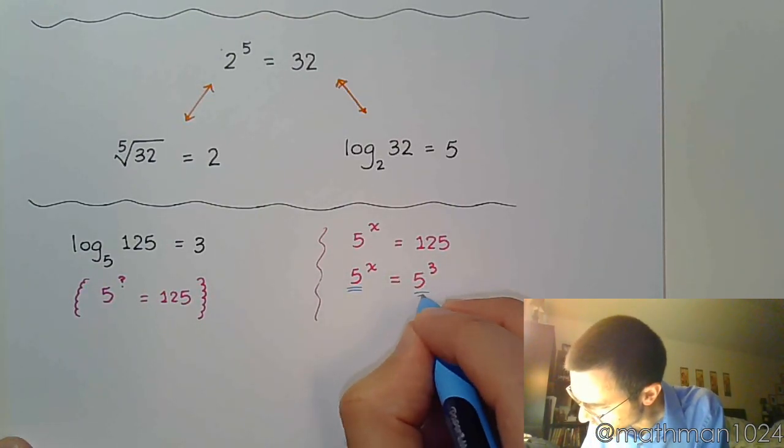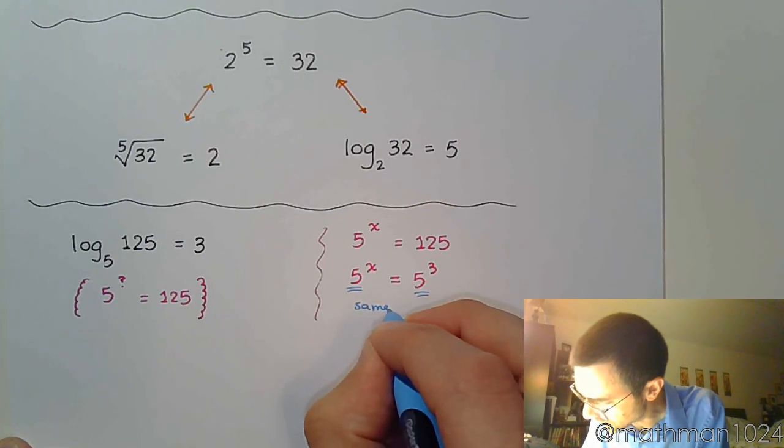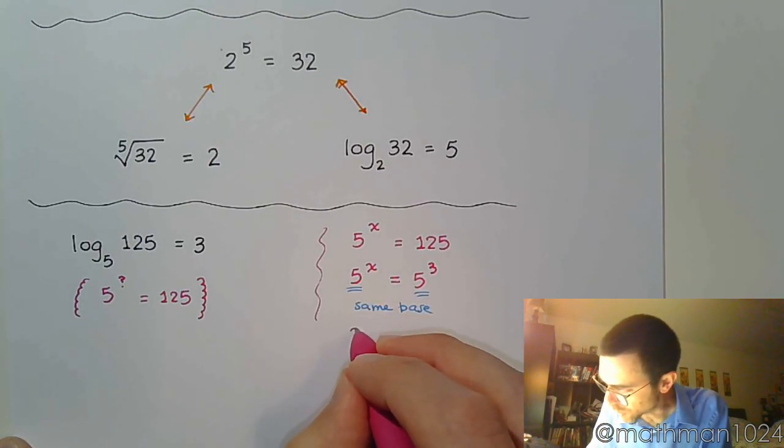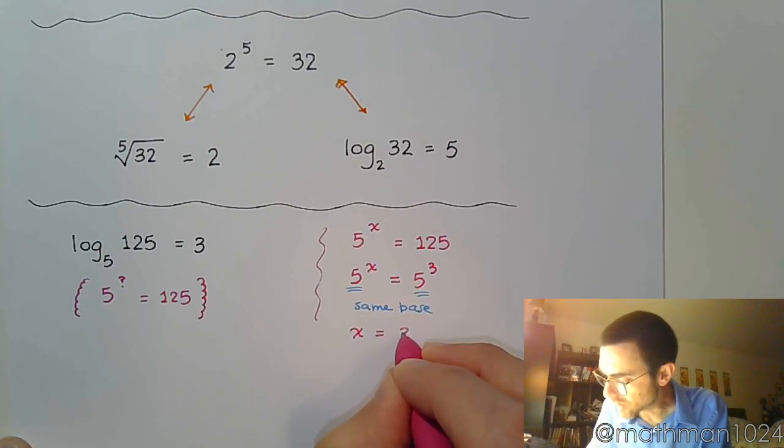And since these guys here have the same base, that means that those powers must be equal, so x equals 3.